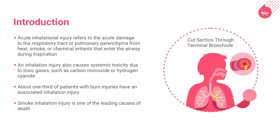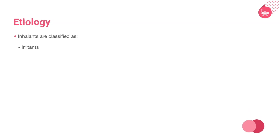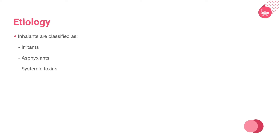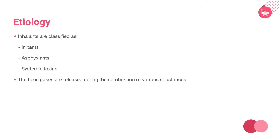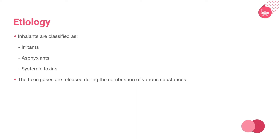We will consider the etiology of acute inhalation injury. Most inhalants are classified as irritants, asphyxians, or systemic toxins. These toxic gases are released during the combustion of various substances and are listed in a table in the following slides.